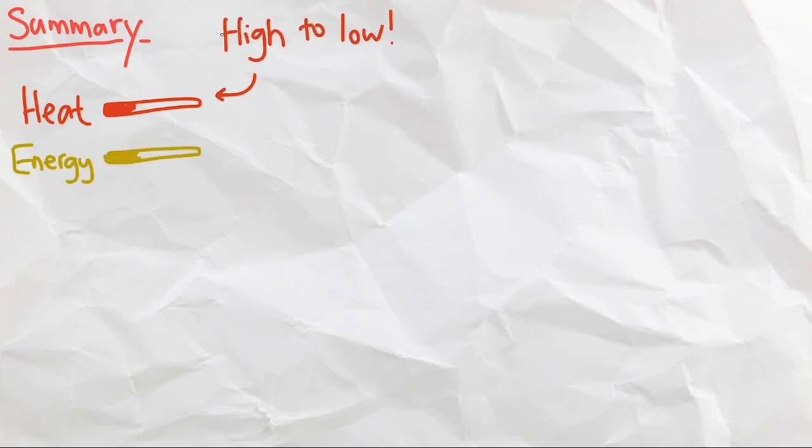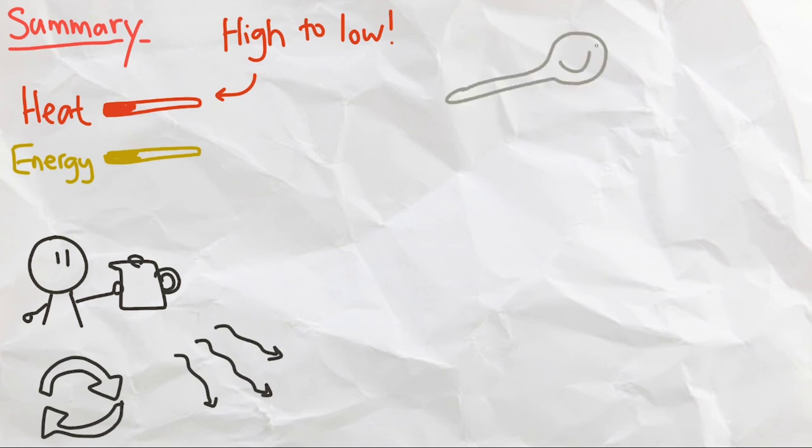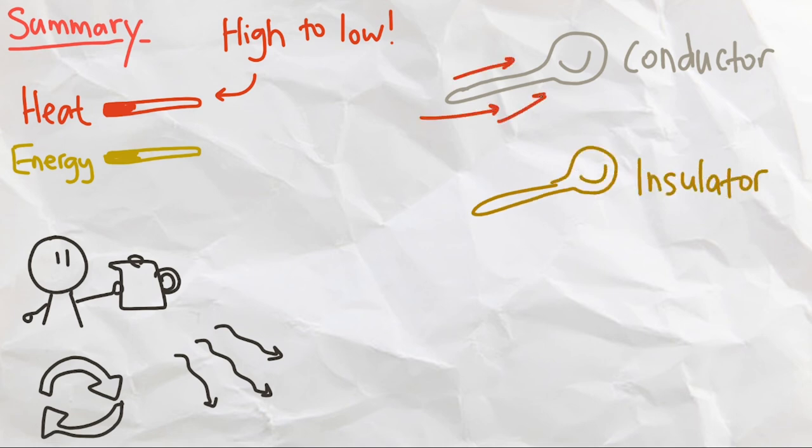And there we have it! Heat is how much energy an object has, and it will always transfer from higher energy to lower energy, through conduction, convection, and radiation. A metal spoon will feel colder because it is a conductor, and will take more heat away from our hands than a wooden spoon, which is an insulator.